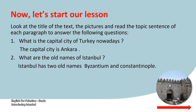Question number two: what are the old names of Istanbul? After you read the text, you know that Istanbul has two old names, two former names. The first one is Byzantium, and the second one is Constantinople.